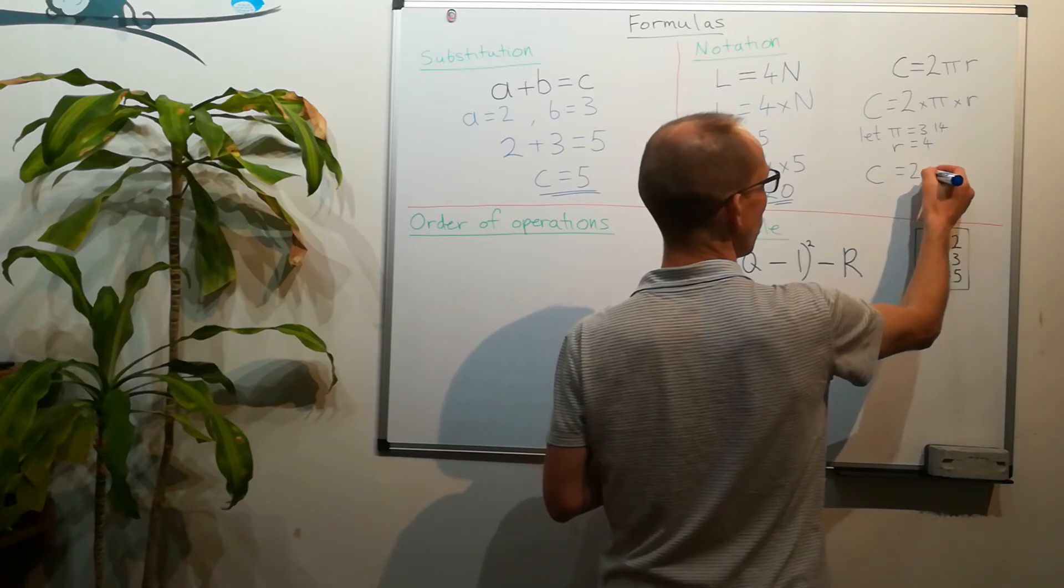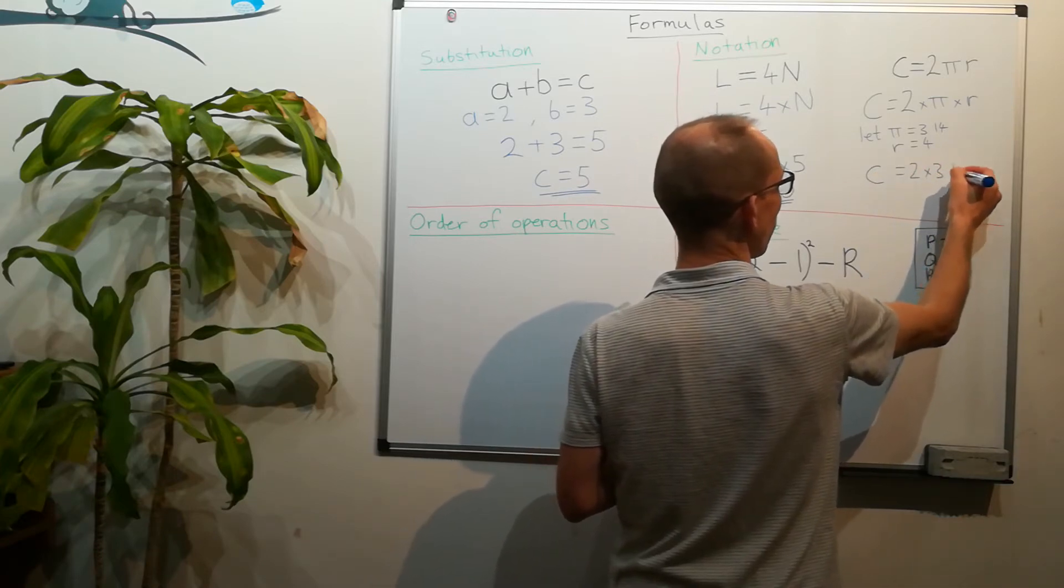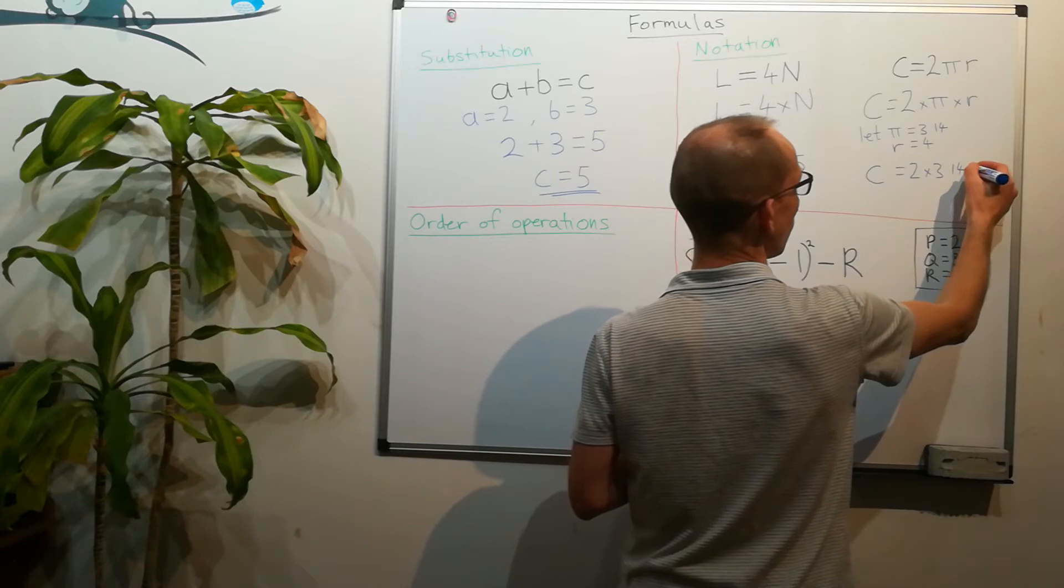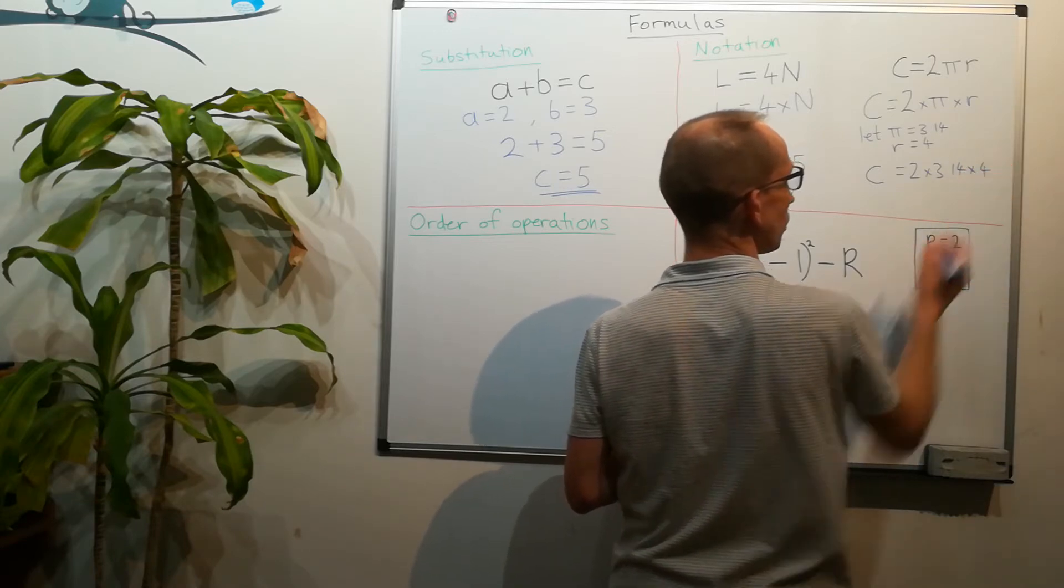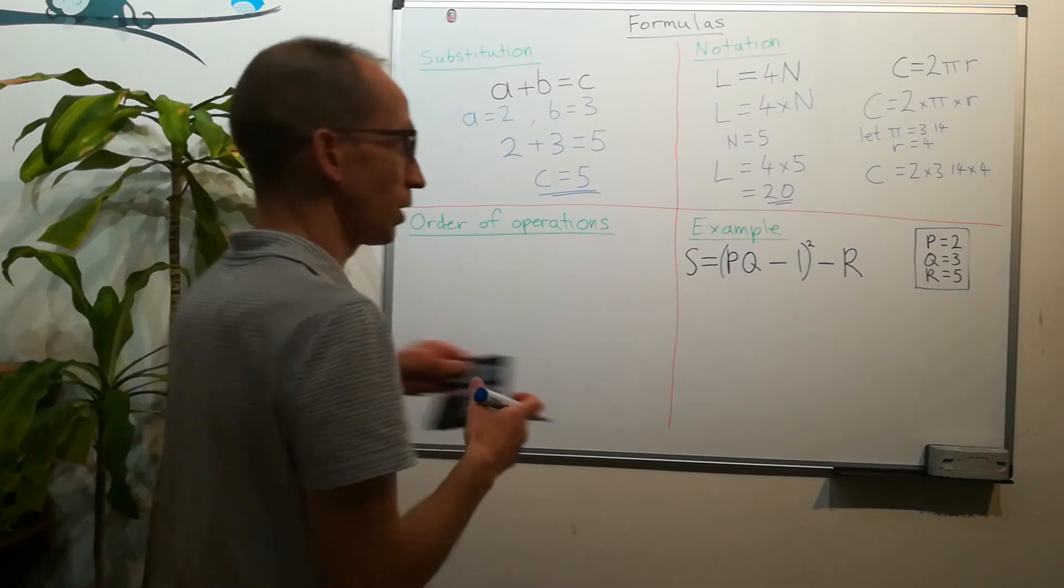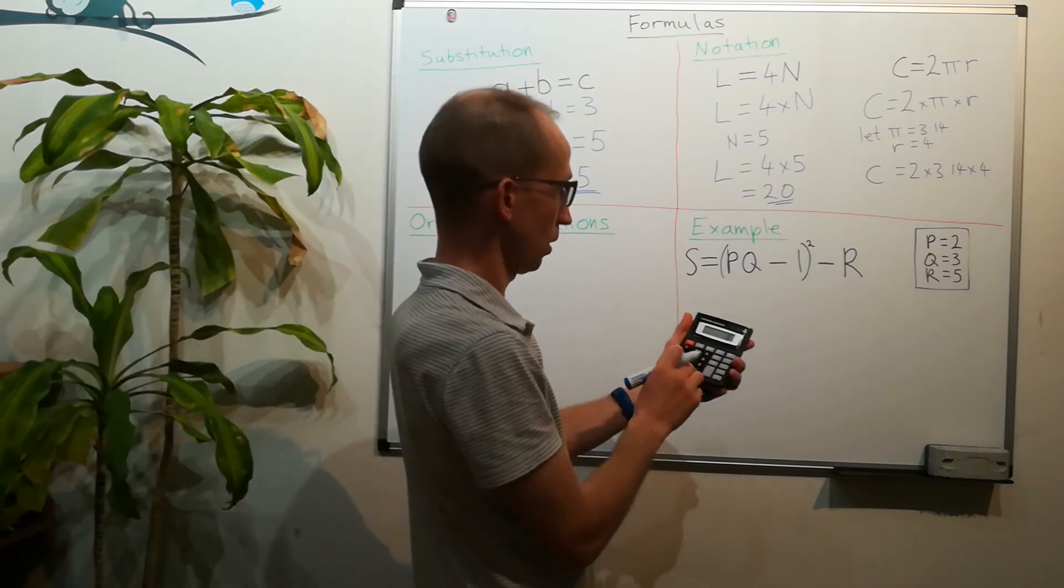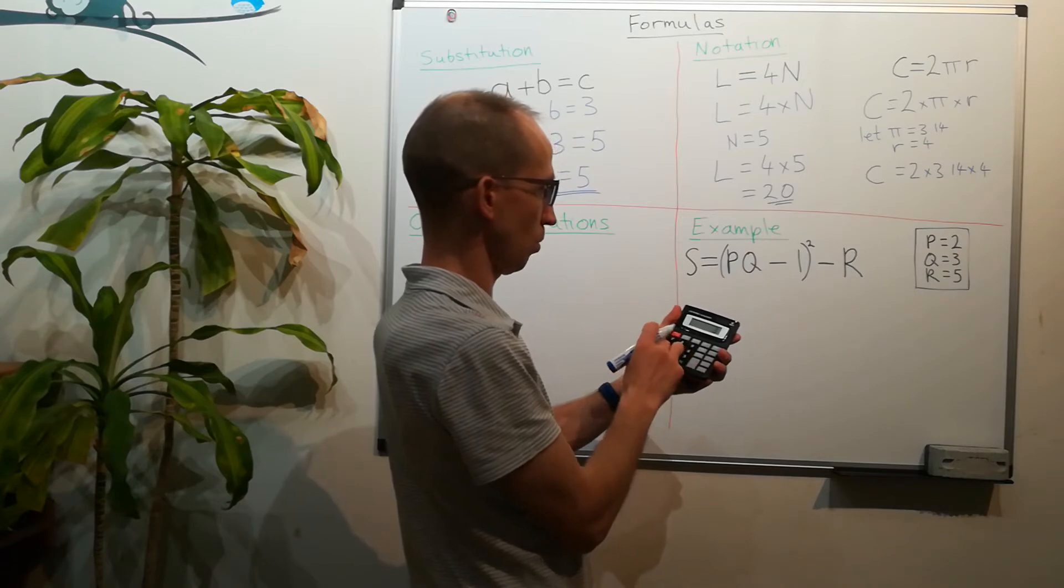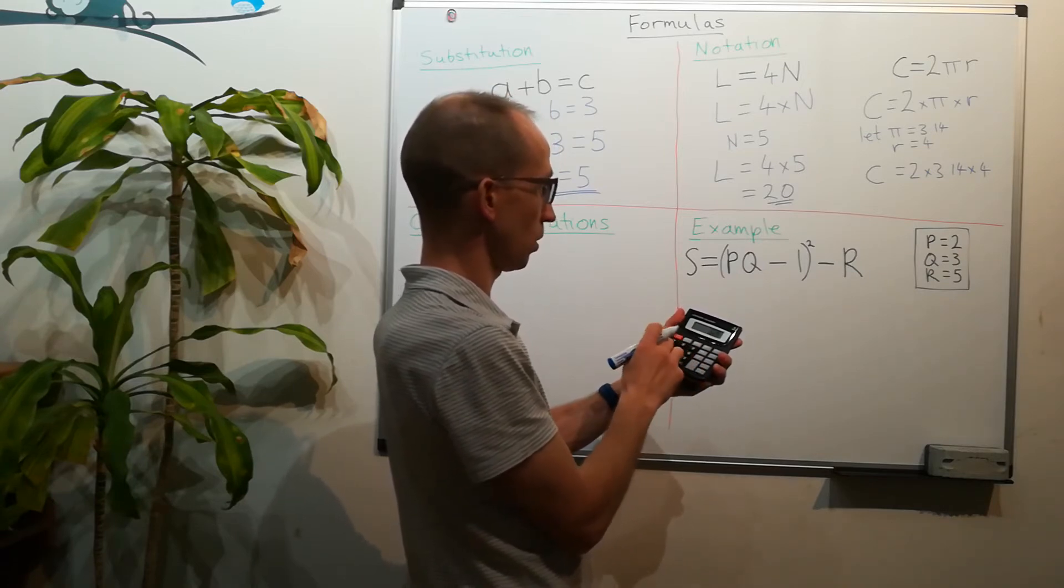So c in this case would be 2 times 3.14 times 4, which if we reach for the calculator, 2 times 3.14 times 4 gives us the circumference of 25.12.